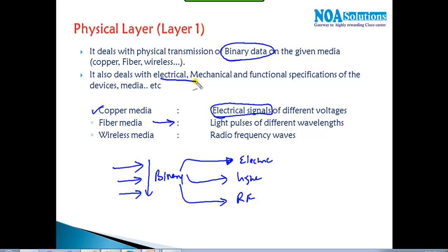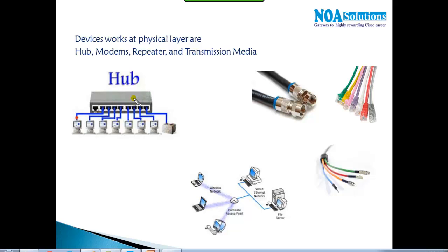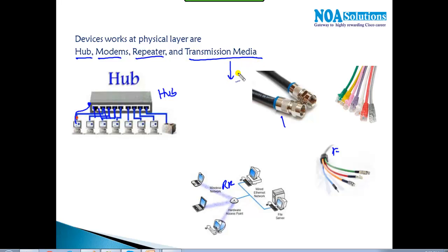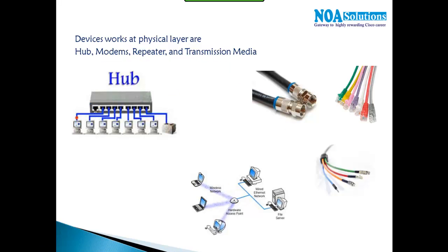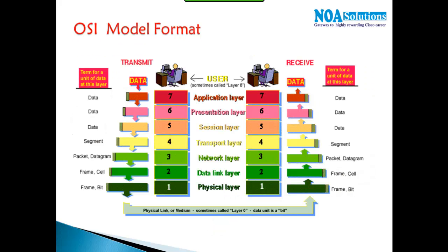The physical layer defines the electrical, mechanical, and functional specifications for devices and the transmission media. Devices like hubs also come under Layer 1 because a hub simply receives signals in the form of zeros and ones and passes the information to all remaining devices. Hubs, modems, repeaters, and all transmission media such as cables and wireless devices all come under the physical layer, dealing with the actual physical transmission of information.